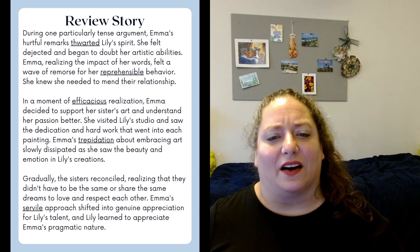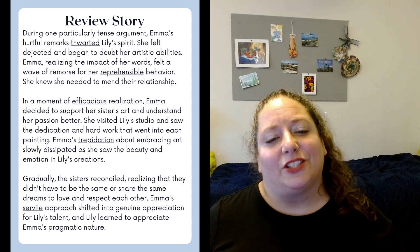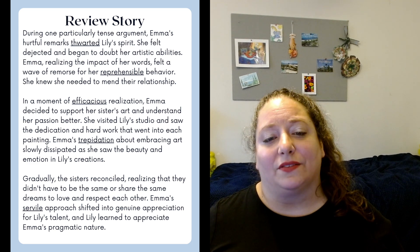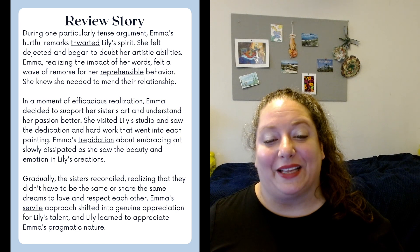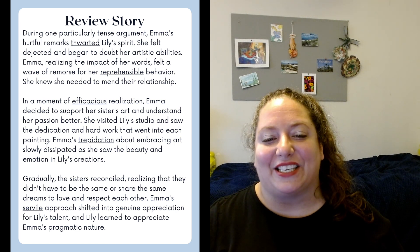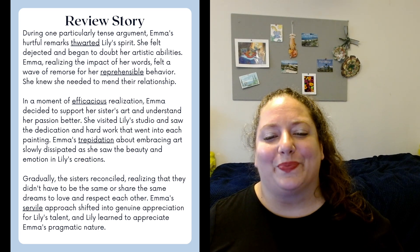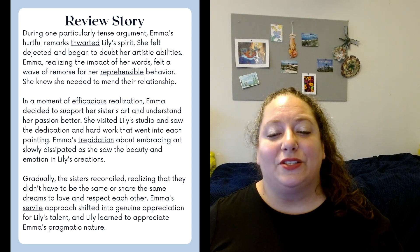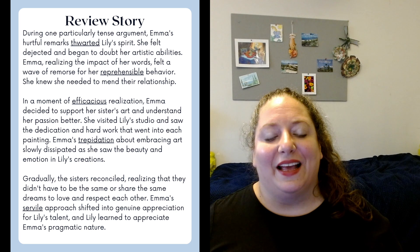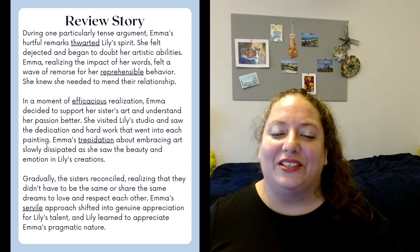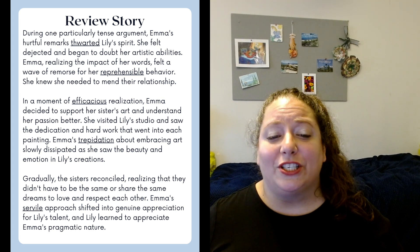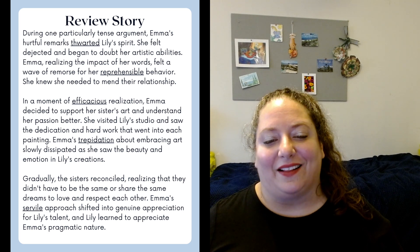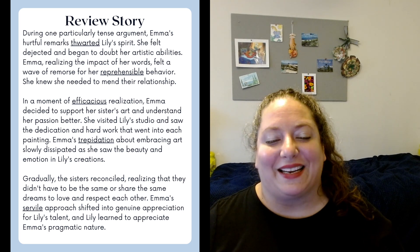During one particularly tense argument, Emma's hurtful remarks thwarted Lily's spirit. She felt dejected and began to doubt her artistic abilities. Emma, realizing the impact of her words, felt a wave of remorse for her reprehensible behavior. She knew she needed to mend their relationship. In a moment of efficacious realization, Emma decided to support her sister's art and understand her passion better. She visited Lily's studio and saw the dedication and hard work that went into making each painting. Emma's trepidation about embracing art slowly dissipated as she saw the beauty and emotion in Lily's creations. Gradually, the sisters reconciled, realizing that they didn't have to be the same or share the same dreams to love and respect each other. Emma's servile approach shifted into genuine appreciation for Lily's talent, and Lily learned to appreciate Emma's pragmatic nature.